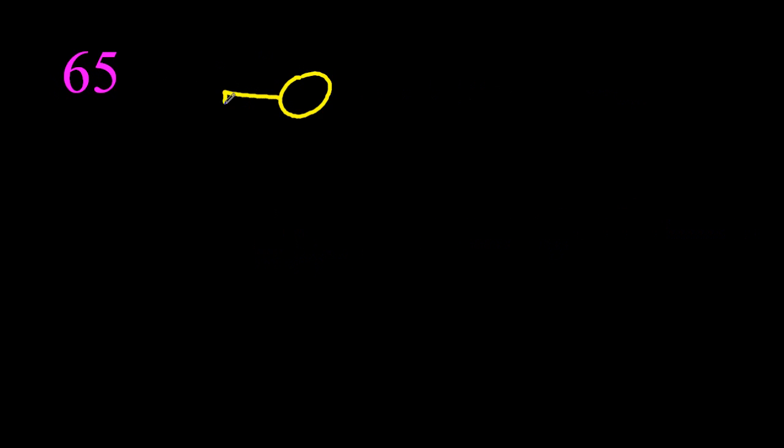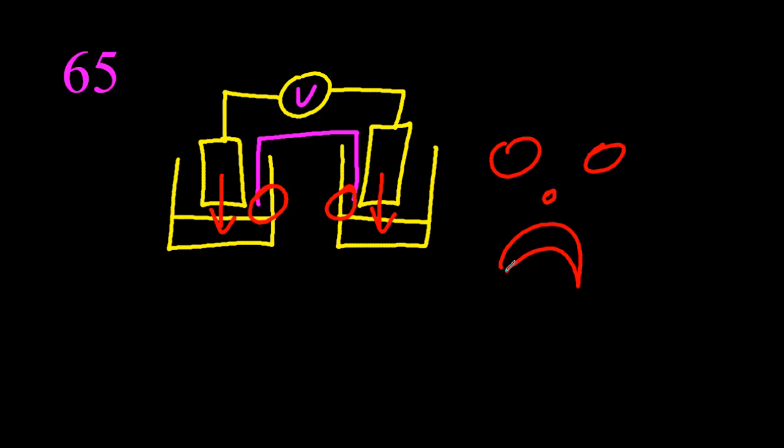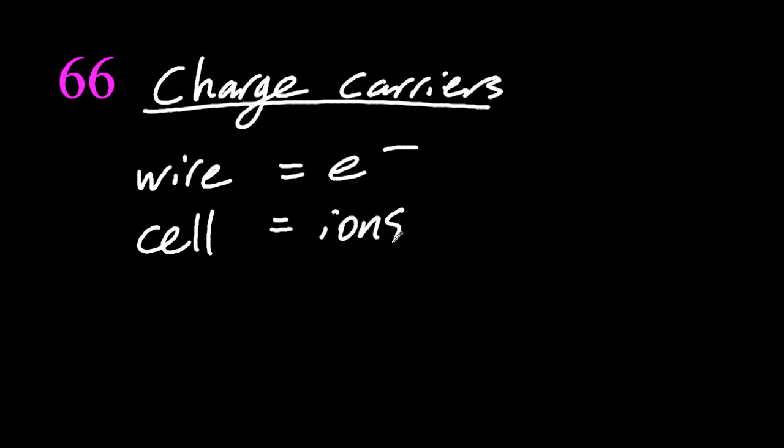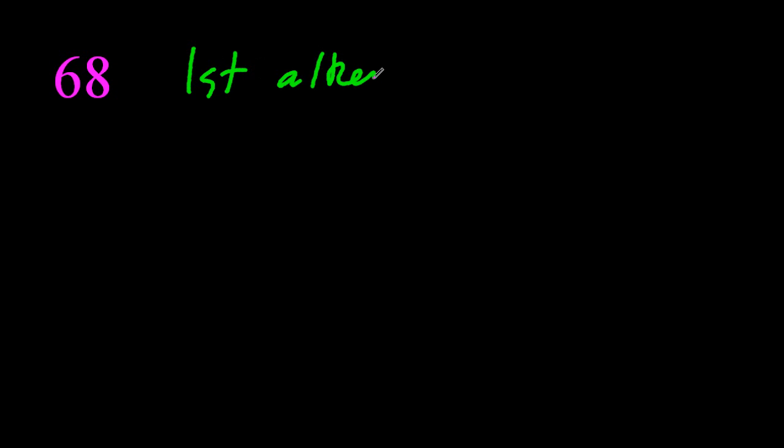65. Here is a really badly drawn voltaic cell. The metals are not touching the solutions and the salt bridge isn't either, so that's really bad. 66. What carries the charge in a voltaic cell? Electrons in the wire and ions in the cell itself. Here's an electrolysis cell. That won't work. You need freely moving charged particles to conduct electricity and solid salt is not freely moving. It does contain charged particles though.